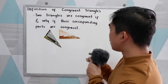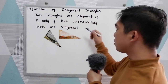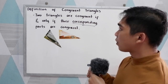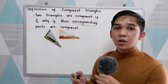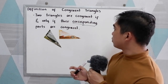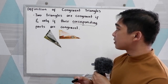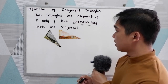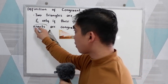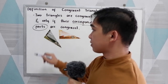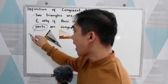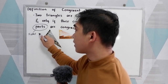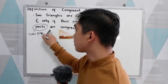So we have here a new word: corresponding. When we say corresponding, how are we going to write the corresponding sides and angles? Because we are dealing with the parts of the triangles — parts means the sides and the angles.